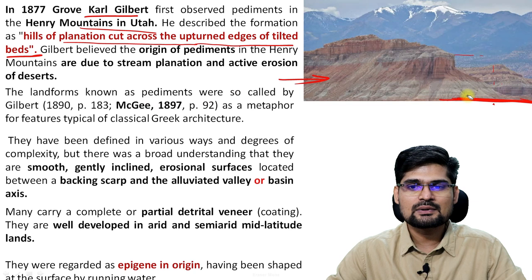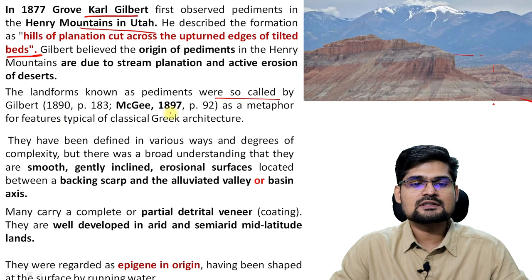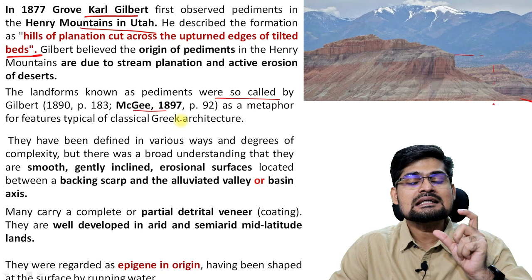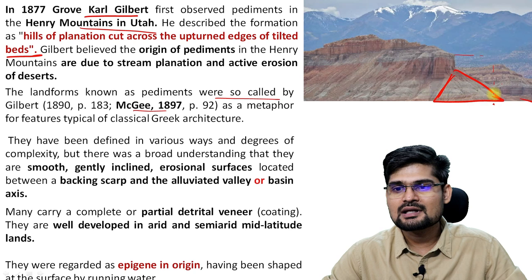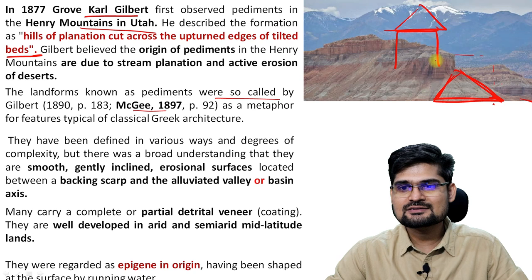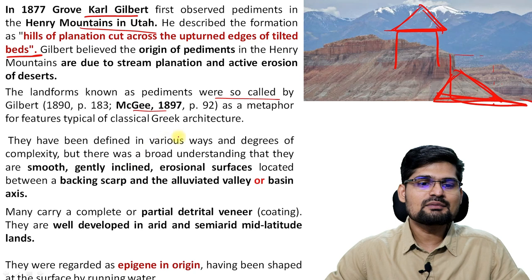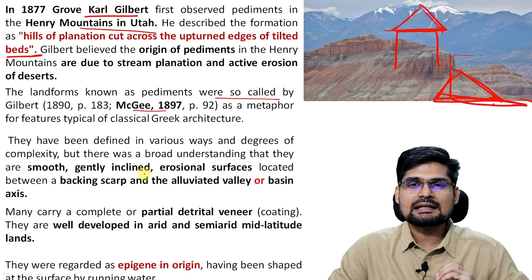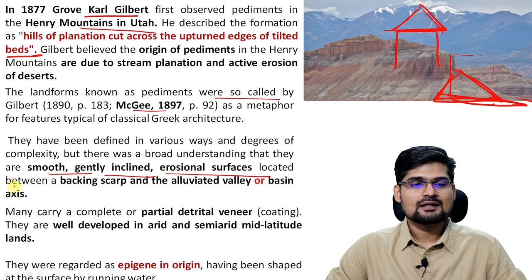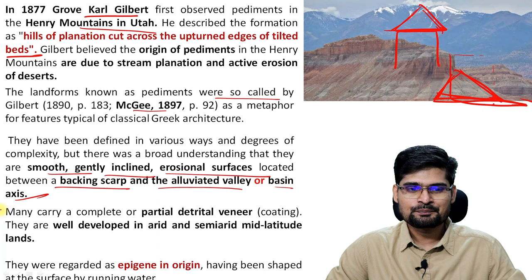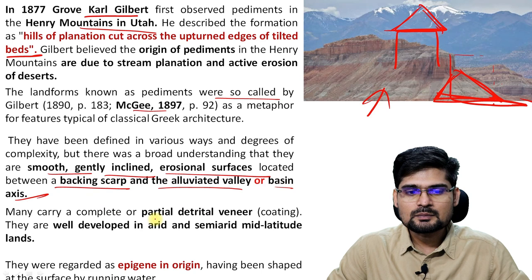The landforms known as pediments were so called by Gilbert and further discussed by McGee. It has also been taken from a basic structure in Greek architecture — you have seen those particular triangular structures; that kind of triangulation is also called pediment. They have been defined in various ways by different scholars. The basic idea is that they are smooth, gently inclined erosional surfaces located between the backing scarp and elevated valley or basin axis, and many carry a complete or partial detrital veneer or coating.